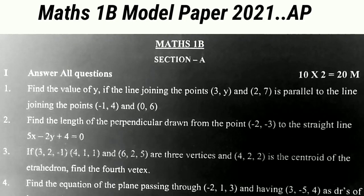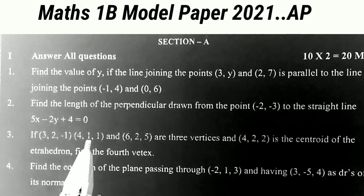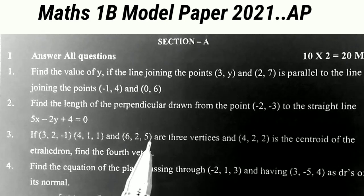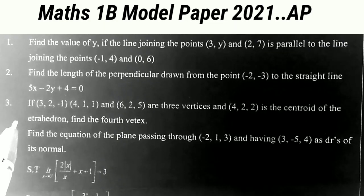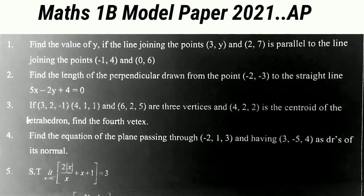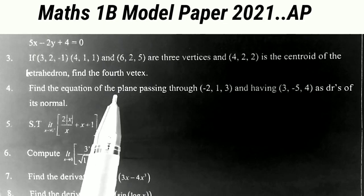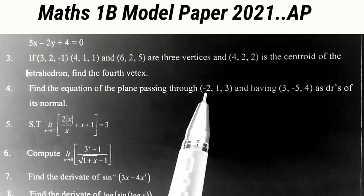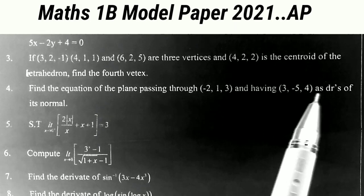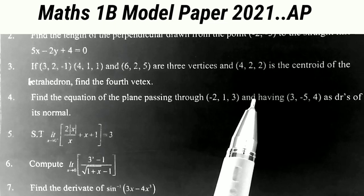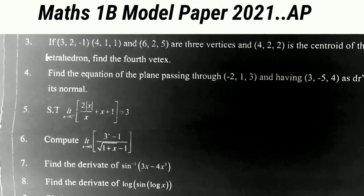The third question: if (3, 2, -1), (4, 1, 1), and (6, 2, 5) are three vertices and (4, 2, 2) is the centroid of the tetrahedron, then find the fourth vertex. This is also very important. The next one: find the equation of the plane passing through the point (-2, 1, 3) and having (3, -5, 4) as the direction ratios of its normal. This is also very important from the plane chapter.